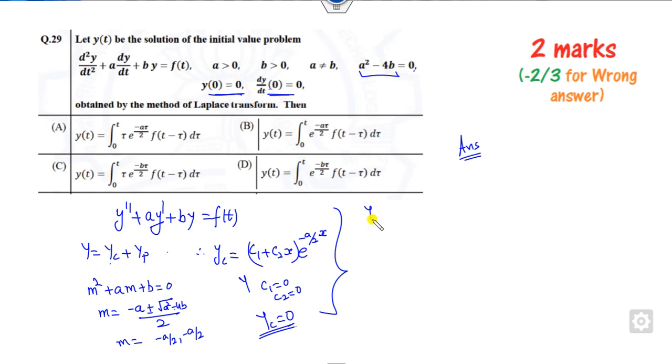Now your question will be how you find the particular integral. That is f(t) upon m squared plus a m plus b. Now how you can do that? You can take the completing square: m plus a/2 squared plus b minus a squared by 4. This part will be 0 because a squared minus 4b will be 0.